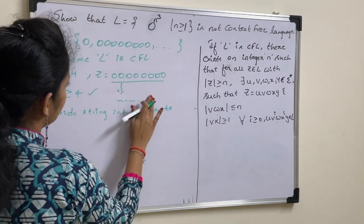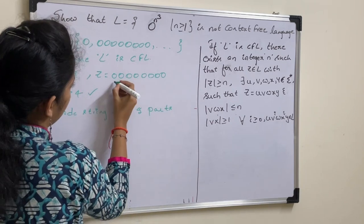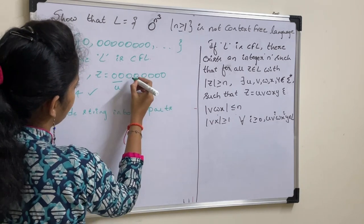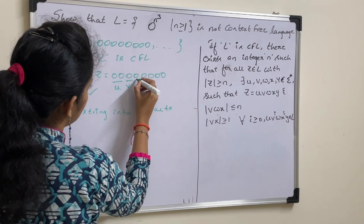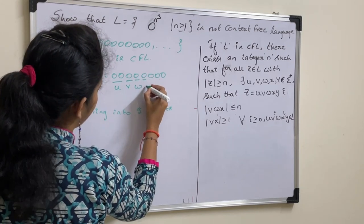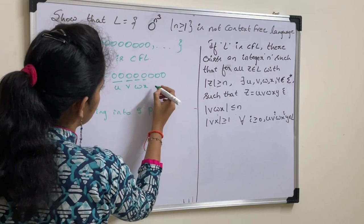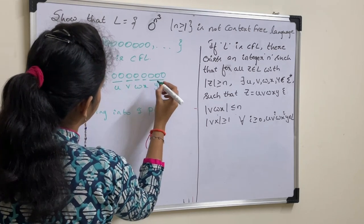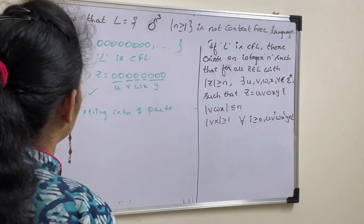Divide this. Let it be u, v, w, w, then x and y.